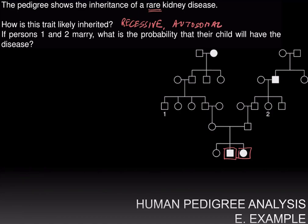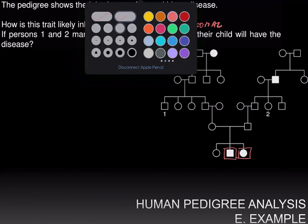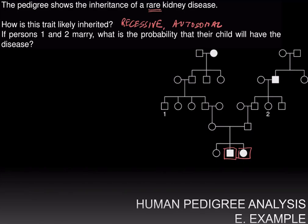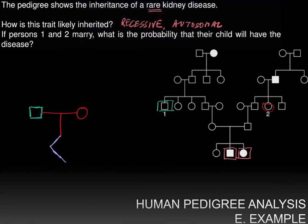The second part of the problem asks: what is the probability that the child of individuals one and two will have the disease? Since it's a recessive disease, we are computing the probability that if one and two mate and have a child, what is the probability that the child has the disease?